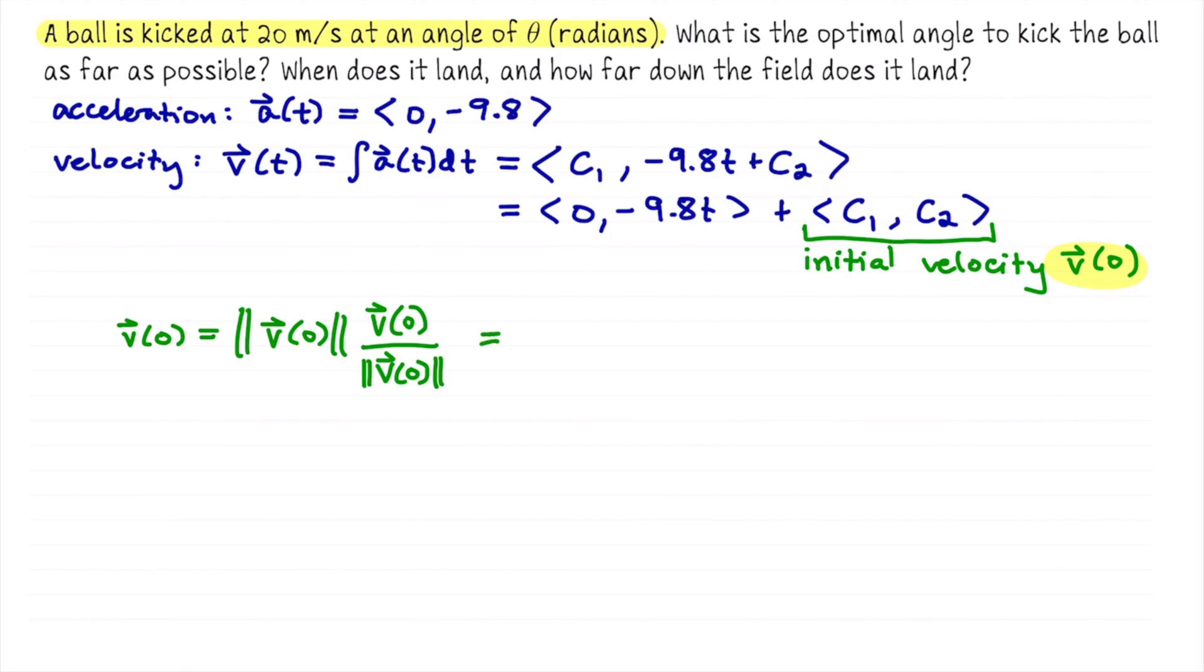So here our magnitude is 20. And our unit-linked sense of direction, as it so often is expressed, is going to be cosine of theta, sine of theta. Theta here is something that we're going to work out, so theta is to be determined.